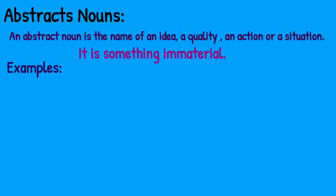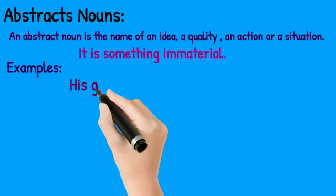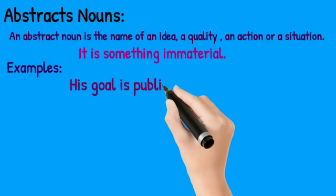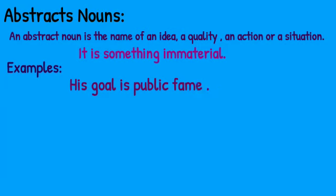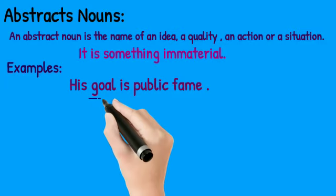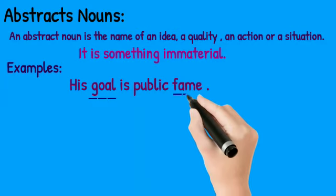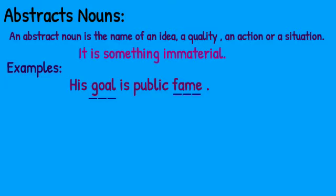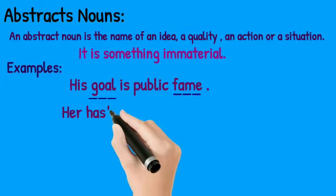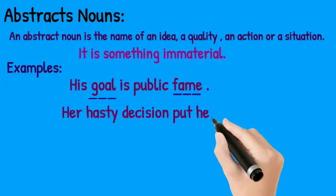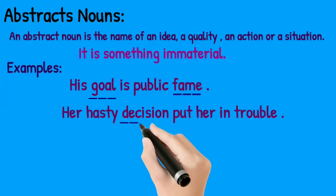Look at the examples. His goal is public fame. In this example, goal and fame are the nouns, and these two are abstract nouns as you can't see the goal or the fame.